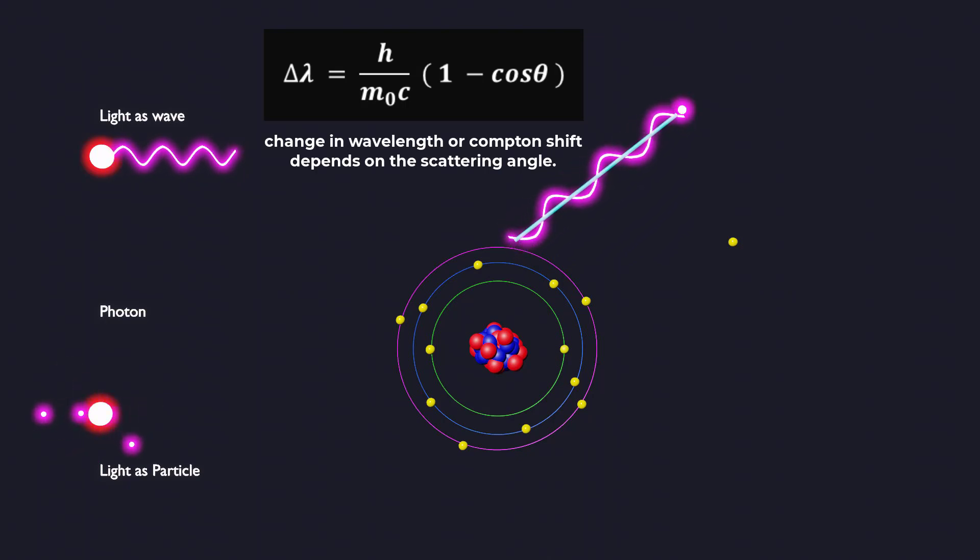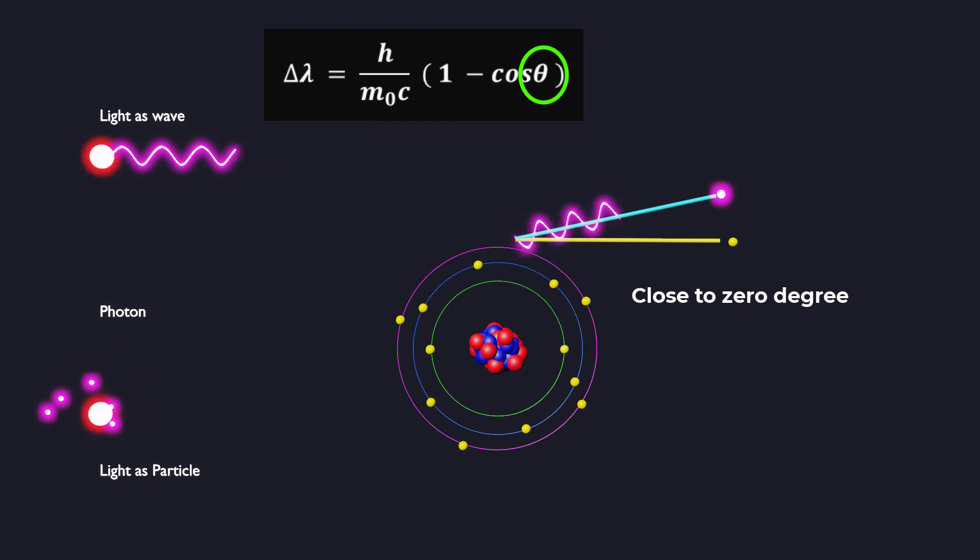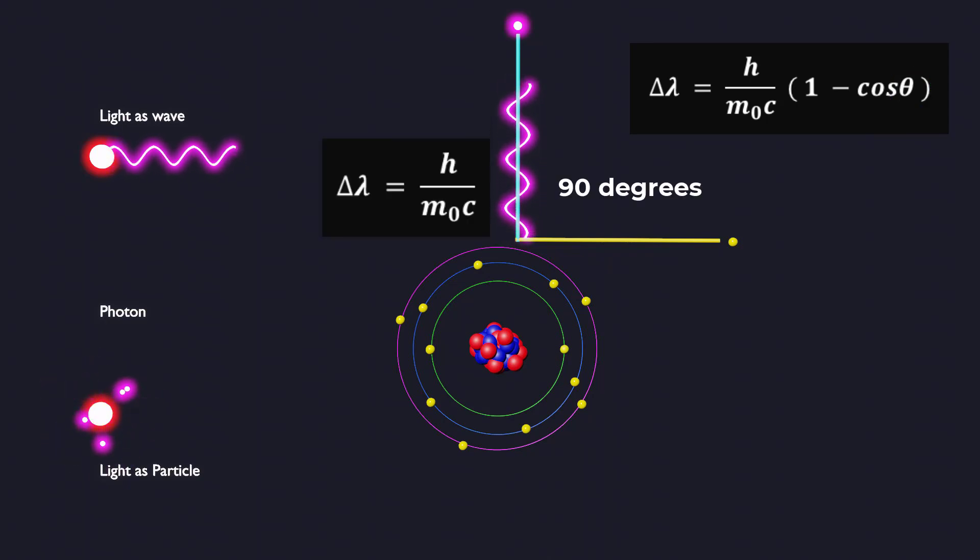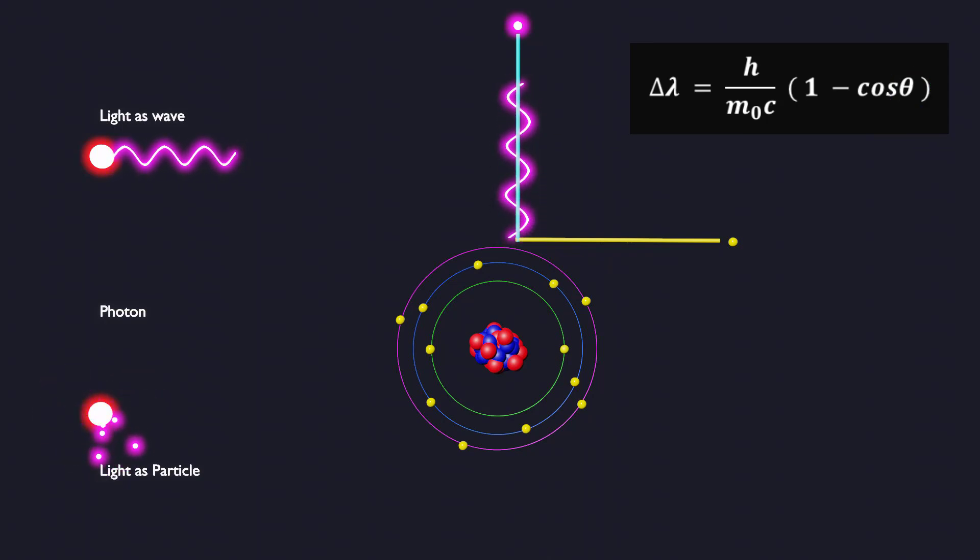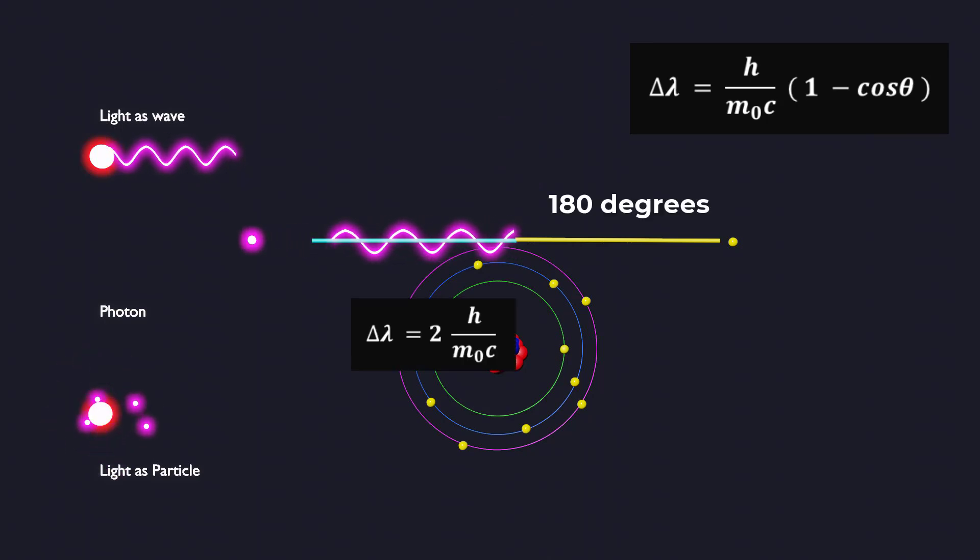The change in wavelength depends on the scattering angle at which the scattered photon is observed. For small angles, the change in wavelength is relatively small. As the scattering angle increases, the Compton Shift also increases. When the scattering angle is 180 degrees, the maximum Compton Shift occurs.